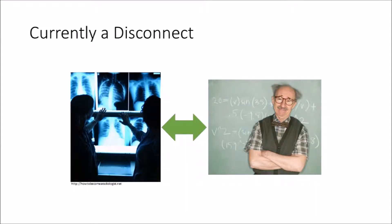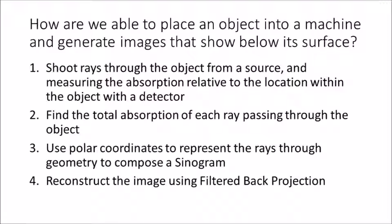However, there is currently a disconnect between the practice and the math behind computerized tomography. You may be able to walk up to someone and ask them if they have ever heard of a CAT scanner or X-rays and get a positive response, but it is highly unlikely that they would be able to briefly explain the math behind it. How are we able to place an object into a machine and generate images that show below its surface?